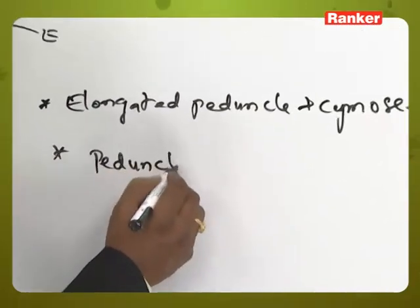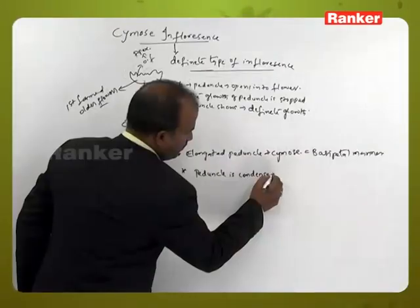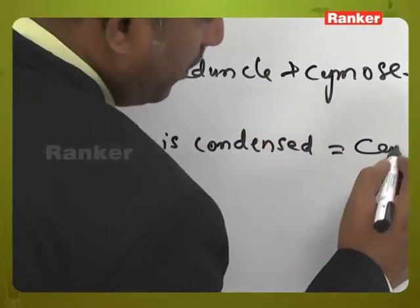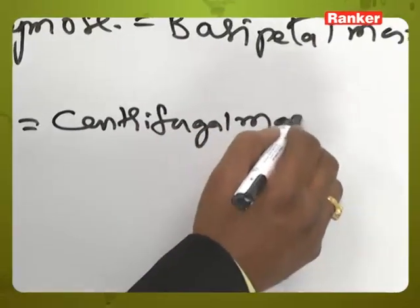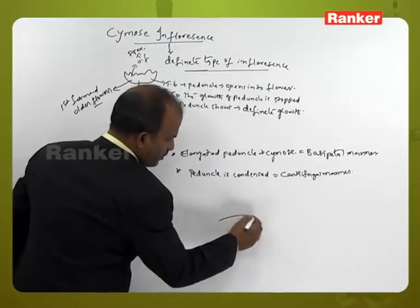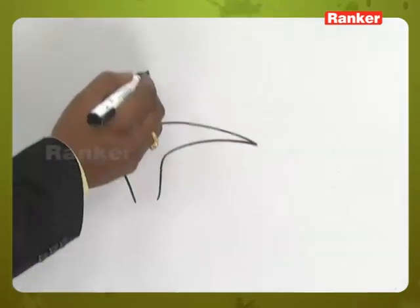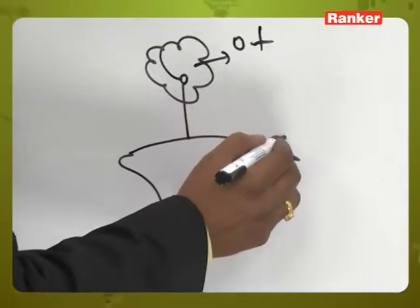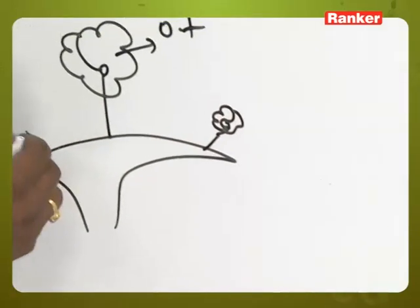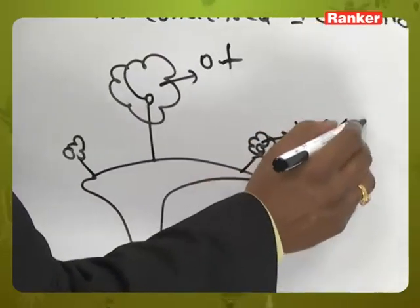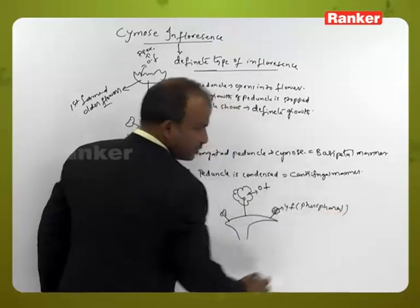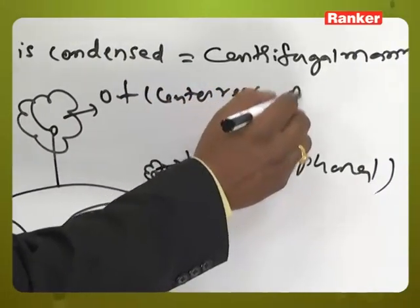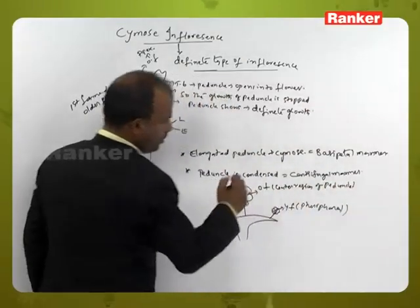When the peduncle is condensed, flowers are arranged in centrifugal manner. In a condensed peduncle, the center shows older flowers and the peripheral part shows younger flowers. The central region has older flowers and the peripheral region has younger flowers.